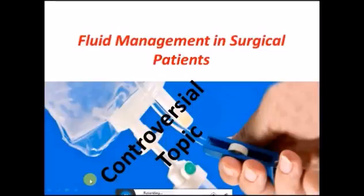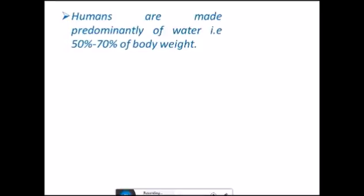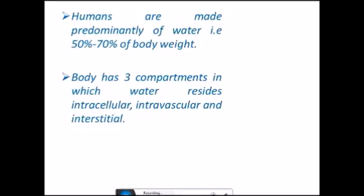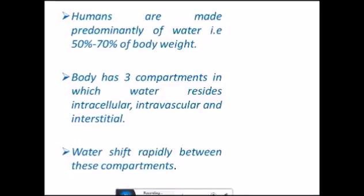Now, human beings are made up predominantly of water, that is 50 to 70 percent of body weight. The body has three compartments in which water resides: intracellular, intravascular, and interstitial compartments. Or we can say intracellular and extracellular compartments. The intravascular and interstitial are part of the extracellular compartment. Water shifts rapidly between these compartments.